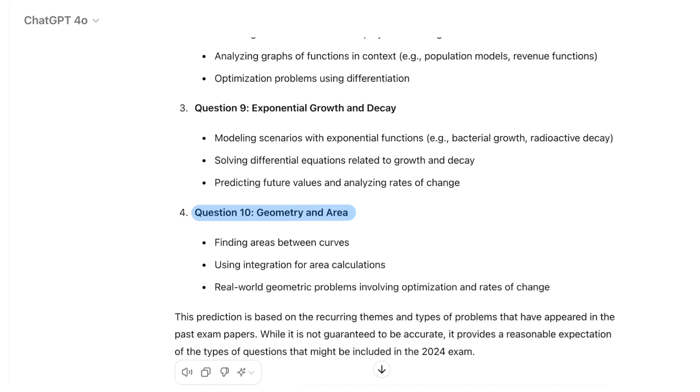After reviewing ChatGPT's predictions, there's a few things to be cautious about. For instance, calculus is mentioned in 5 out of the 10 questions, which is a bit more than usual. Despite this, I do find most of the predictions to be reasonable and plausible. Only time will tell if ChatGPT's insights prove accurate.